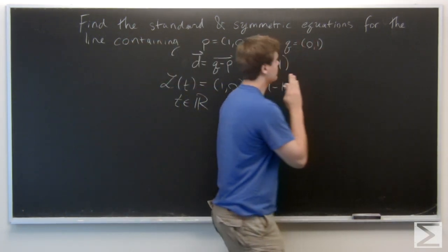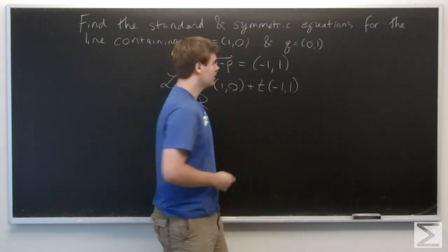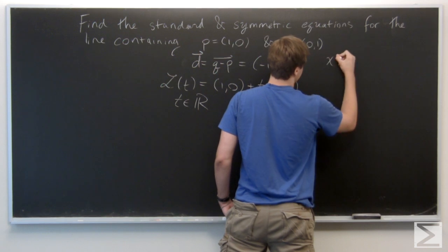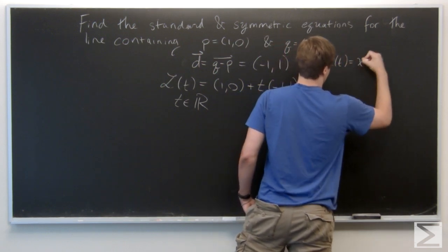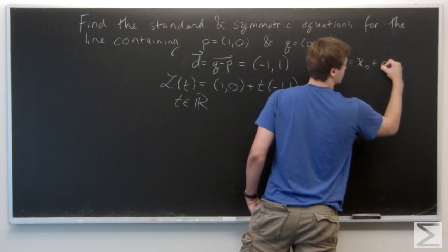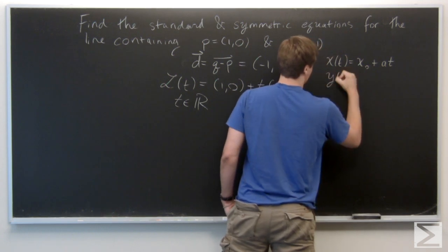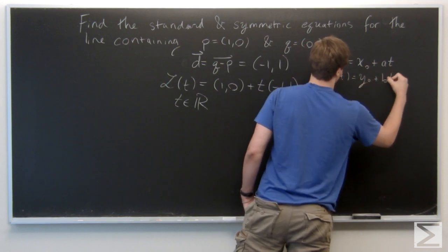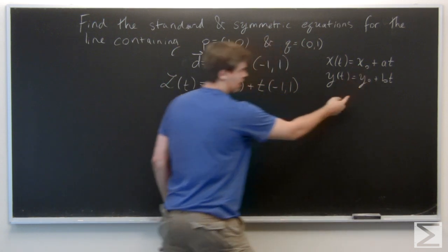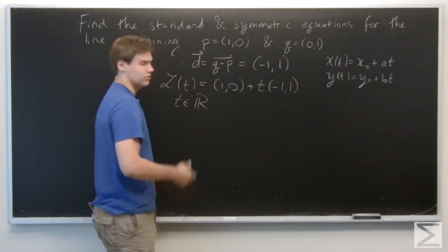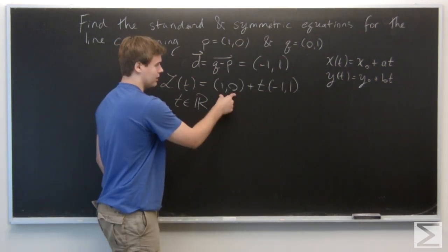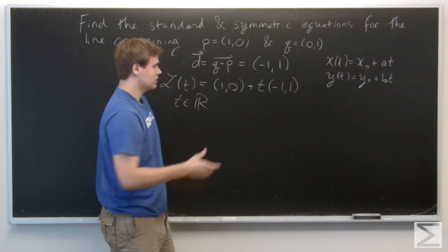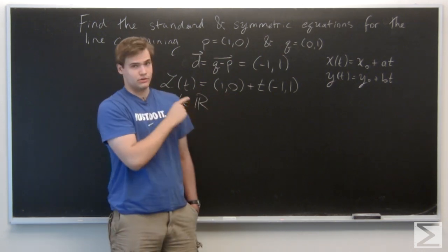Now we want to determine the symmetric equations of this line. Generally, if you're given the two components of the line — X(T) = X₀ + AT, and Y(T) = Y₀ + BT — where X₀ and Y₀ correspond to a point on the line (here, (1, 0)), and A and B correspond to the slopes in those directions (here A = -1 and B = 1).